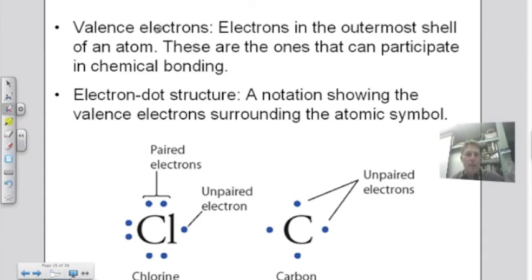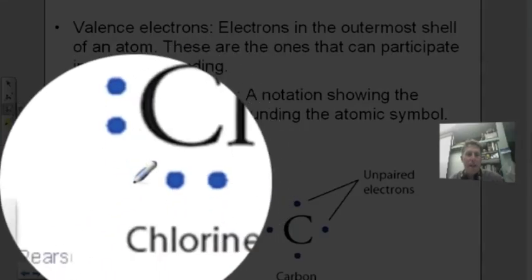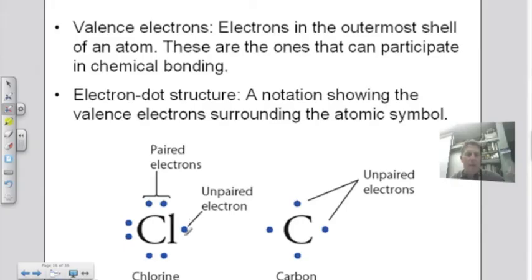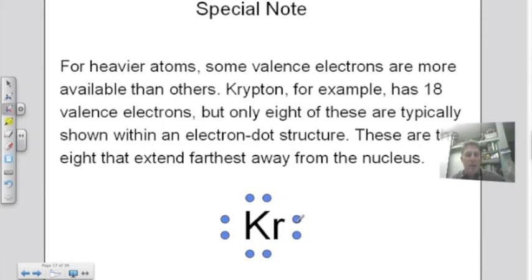Valence electrons are drawn around electron dot structures and signify the bonds that are going to form. Looking at chlorine, I have paired electrons and unpaired electrons — one unpaired. Carbon has four unpaired electrons. The number of unpaired electrons indicates how many bonds that element can form. Krypton is a special case: as a heavier atom, it has 18 valence electrons in its outer shell, but we only draw eight because those are furthest from the nucleus.